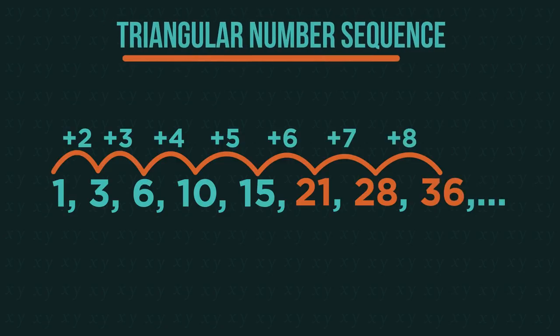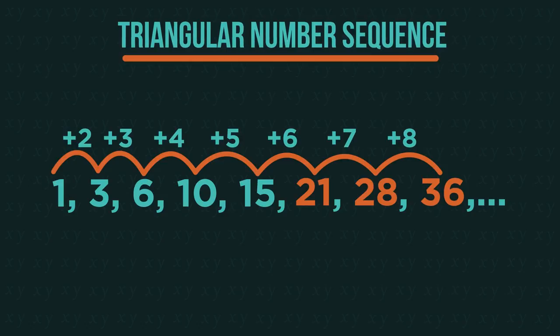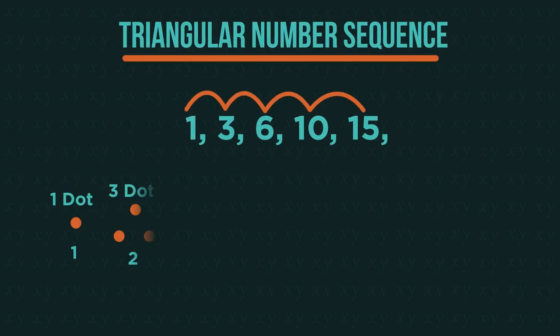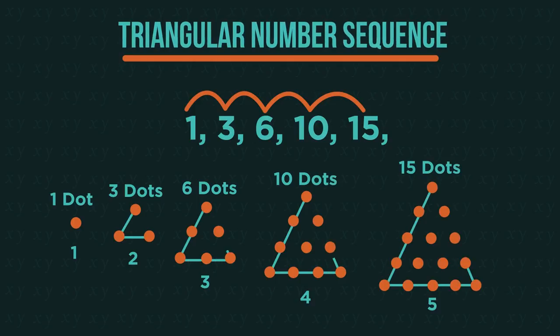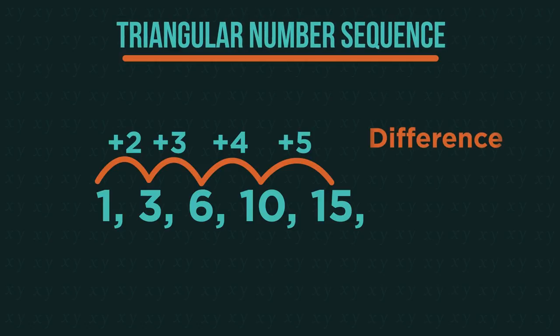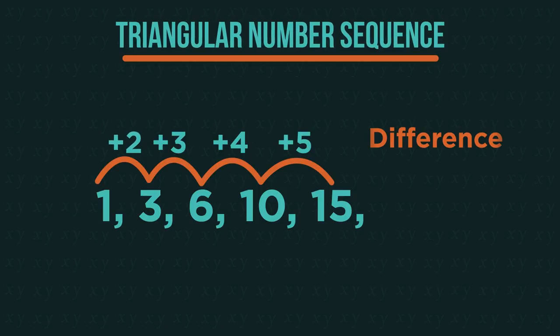These are the triangular numbers or the triangular number sequence. The sequence comes from the pattern of dots needed to make a triangle. They don't have a common difference. The difference changes each time. You add two then you add three then four then five.